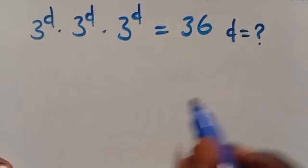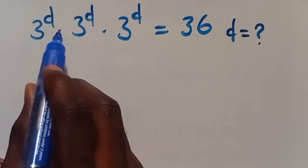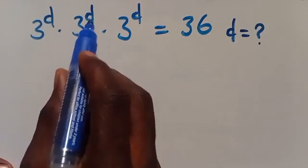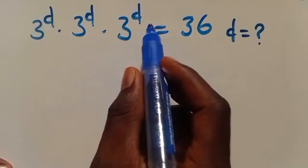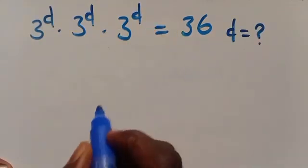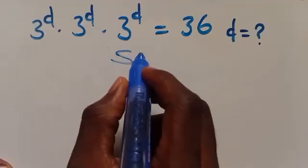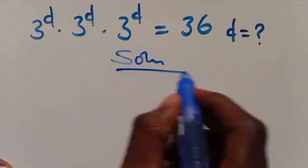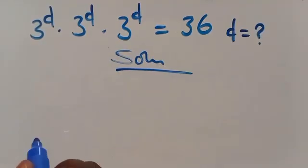Find the value of D given that 3 to the power of D multiplied by 3 to the power of D plus 3 to the power of D equals 36. Let's work through its resolution from here.